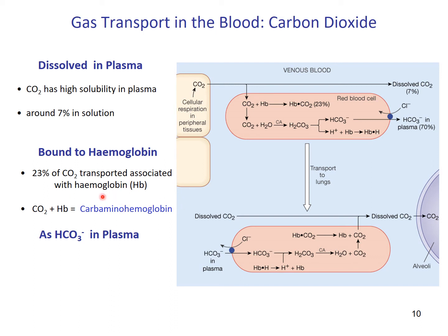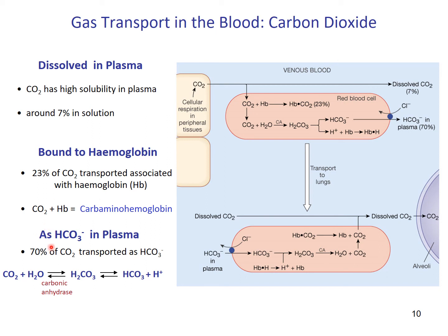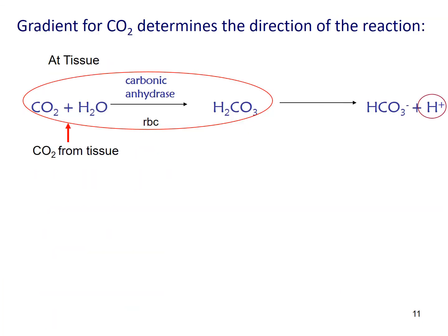Most carbon dioxide — about 70% — is transported in the form of bicarbonate ions. This reaction is enzyme-dependent: carbonic anhydrase combines CO2 and water into carbonic acid, a weak acid that dissociates partially into bicarbonate ions and protons. The bicarbonate ions then exit the red blood cells in exchange for chloride ions to maintain charge balance — a process known as the chloride shift. The formation of bicarbonate ions is a reversible step depending on the carbon dioxide gradient.